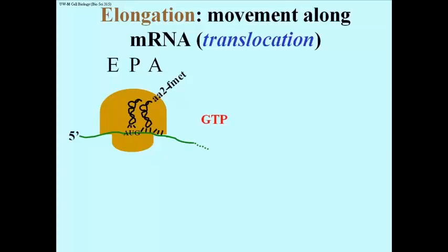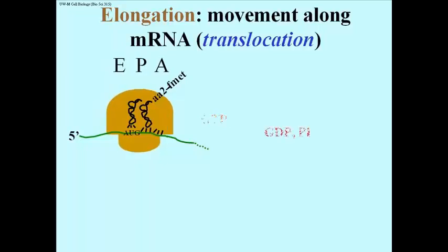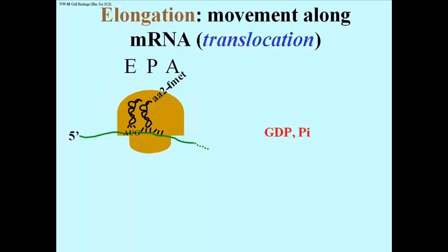Now that we have a dipeptide formed, we need to free up the A-site and put the next codon into the A-site so the third amino acid can get in. That requires GTP and it is catalyzed by a protein that is a component of the ribosome called a translocase.